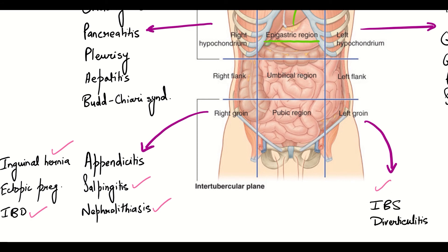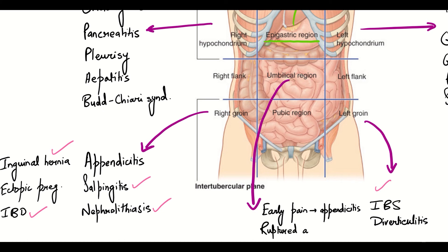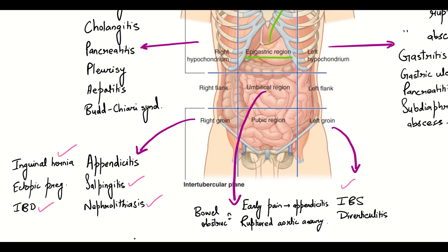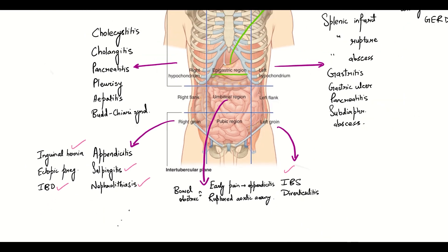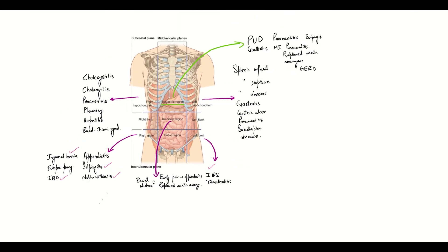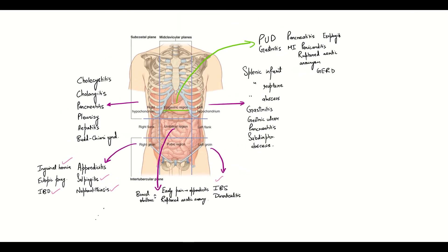In the umbilical region, pain will be seen in case of early appendicitis, in case of ruptured aortic aneurysm as we already saw in the epigastric region, and in bowel obstruction, as it is obvious that the intestines are present in this region. This is an overview of the distribution of disease which manifests as abdominal pain. We will be using this diagram to diagnose a patient based on the location of pain.